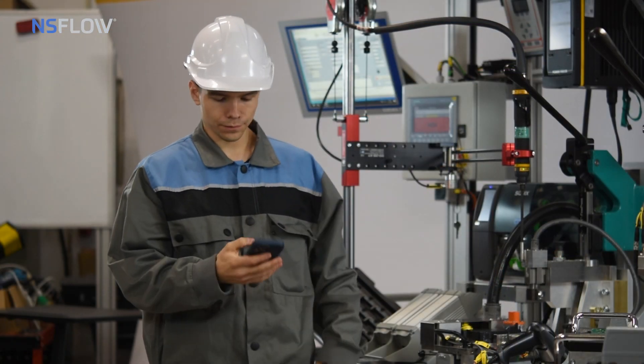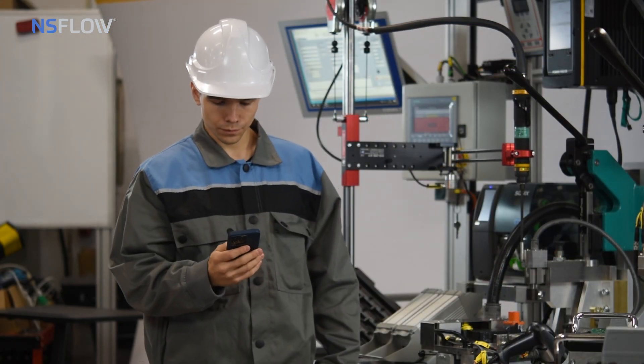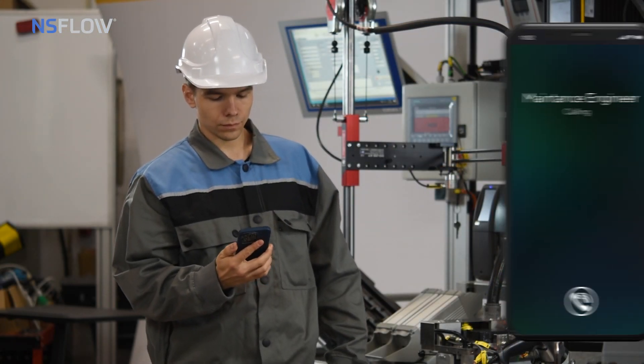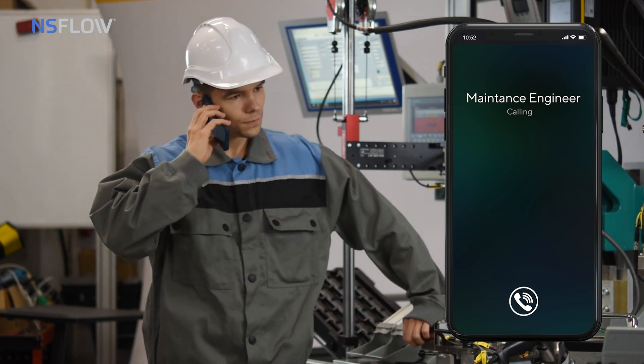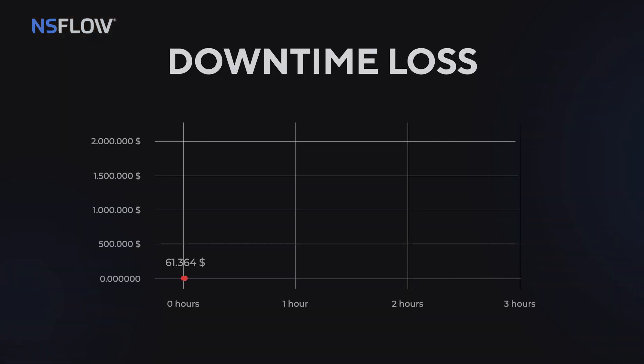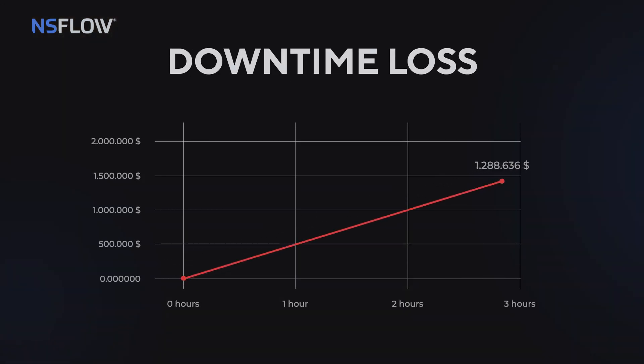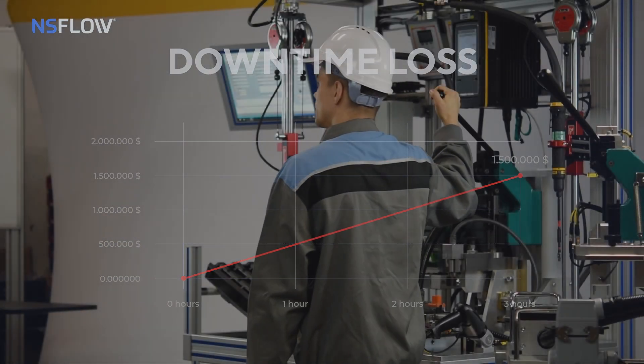When a machine stops, a standard procedure requires an operator to call a maintenance engineer in. Unfortunately, waiting for an engineer can take a lot of time — in fact, not only time but money as well. Downtimes can incur significant losses: the production comes to a halt, and the operator remains idle.